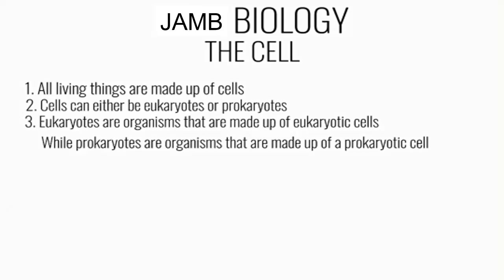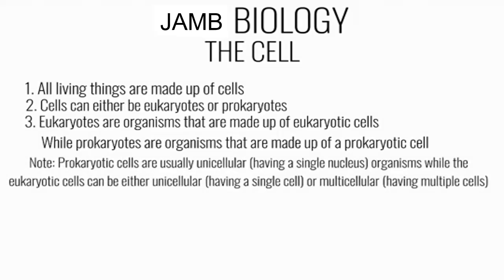Number three: eukaryotes are organisms made up of eukaryotic cells. Eukaryotic cells are simply cells with a definite nucleus that is bound by a membrane. On the other hand, prokaryotes have prokaryotic cells — cells without a true nucleus, and they also lack membrane-bound organelles. Prokaryotic cells are usually unicellular organisms.